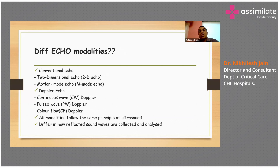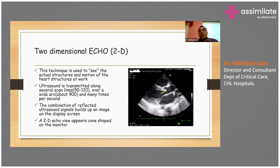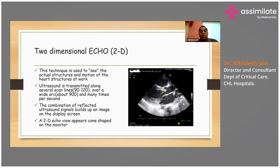2D echo is used to see the actual structures and motion of the heart at work. Ultrasound is transmitted along several scan lines — 90 to 120 — over a wide arc, many times per second. The combination of reflected ultrasound signals builds up an image on the display screen, and the 2D echo view will actually appear cone-shaped on the monitor.